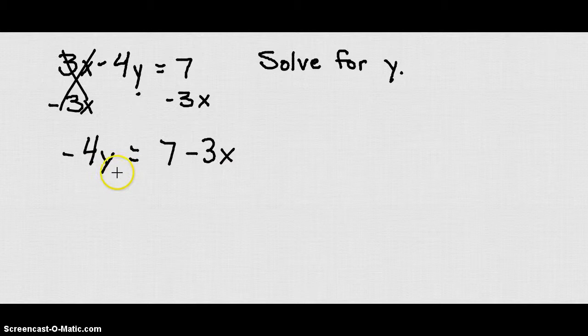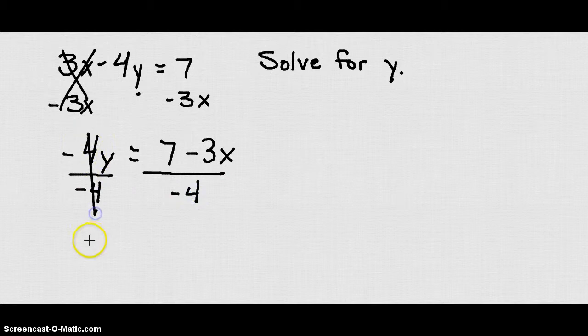Now, in order to get that y by itself, what we want to do is divide both sides by negative 4. We're going to end up with y equals 7 minus 3x over negative 4.